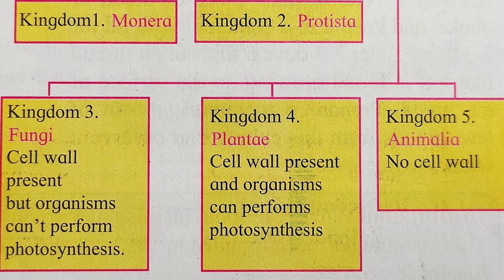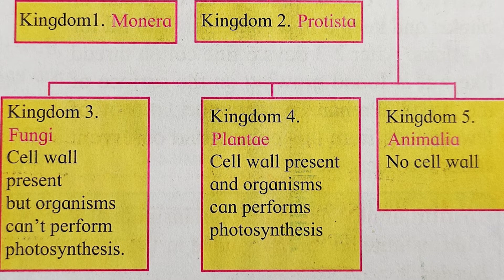Welcome students to the next lecture on the systematics of living organisms. In the previous lectures we discussed the kingdom Fungi and other kingdoms. Now, next is the kingdom Animalia. The members of kingdom Animalia are heterotrophs, adapted to holozoic nutrition. In kingdom Plantae, autotrophs are present, and fungi are heterotrophs that show digestion outside the body. In animals, digestion occurs inside the body.